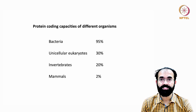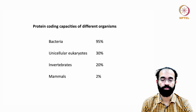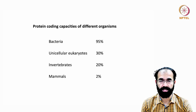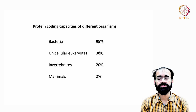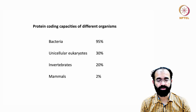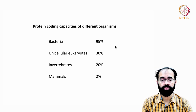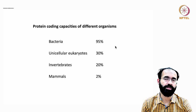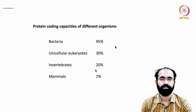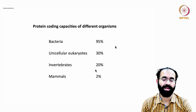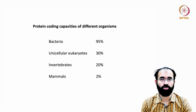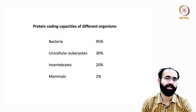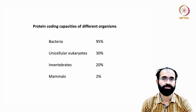In unicellular eukaryotes, only 30% of the genome codes for proteins — a huge difference from 95%. That drops down to 30%, and with a purpose. In invertebrates — which basically means insects and organisms without a vertebral column, like mosquito, fly, cockroach, butterfly, different types of worms, and the model organism C. elegans — they are all invertebrates.